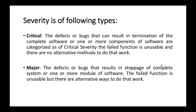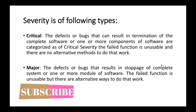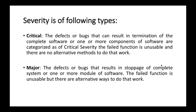The next type is major. Defects or bugs that result in stoppage of the complete system or one or more modules of the software — the failed function is unusable, but there are alternative ways to do that work. For example, if a link on one page fails to load, the user can navigate to another page where the same link is present and use that functionality. This is categorized as major severity.